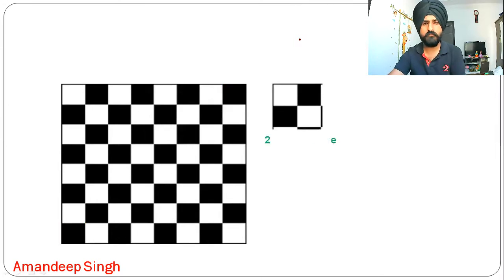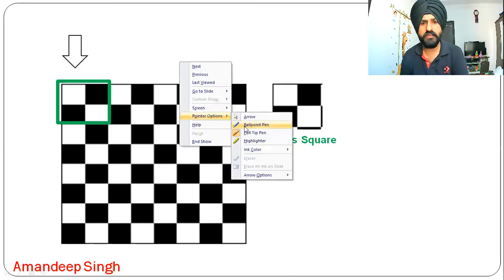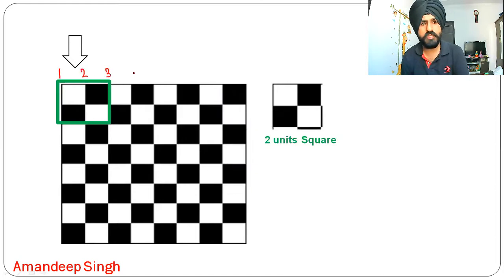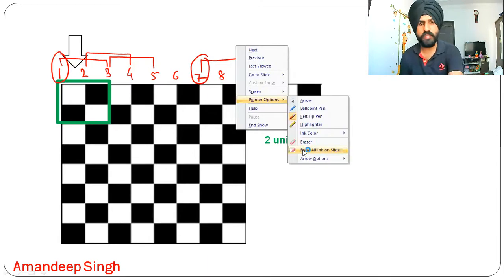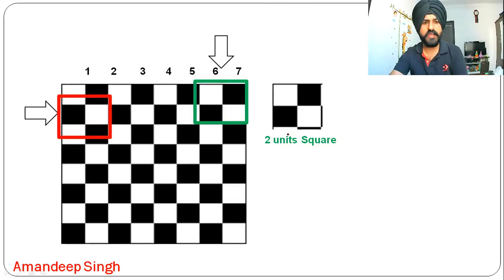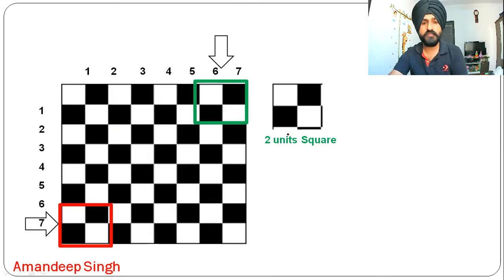Now increase the size to two unit squares. When you go from left to right, you find seven such squares. Let's label the vertical lines one through nine. From one to three you get the first square, from two to four the second, and so on — the last square runs from seven to nine. So there are seven squares left to right and seven top to bottom, giving seven times seven, which is 49 such squares.